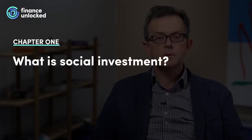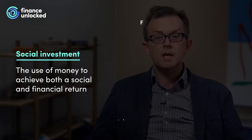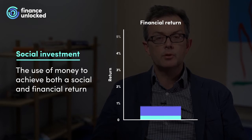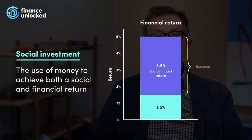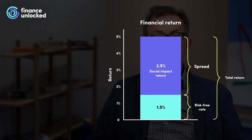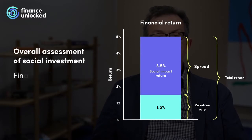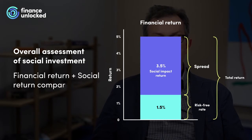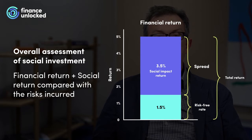What is social investment? Social investment is the use of money to achieve both a social and financial return. The financial return is measured using a conventional approach, looking at the spread to some risk-free index or the internal rate of return. But a return from the social impact delivered by the investment is added to that financial return to allow an overall comparison with the risk incurred.